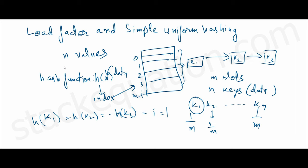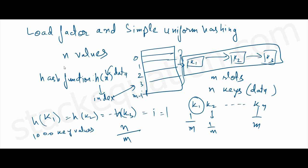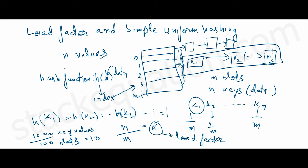What's the average length of each chain at each index? It will be n keys divided by m slots. For example, if we have 1000 key values and only 100 slots, the average chain length at each slot will be 10. This ratio n by m is known as the load factor, denoted by the symbol alpha — it represents the number of key values per slot.